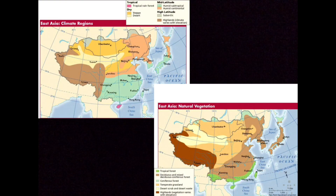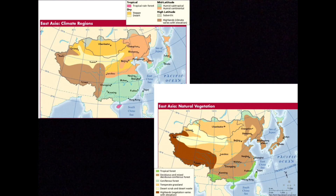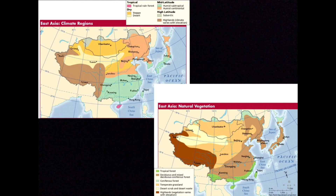Now, the climates and vegetation of East Asia. The first thing to look at is the climates. Latitude and physical features dominate the climate — that's what creates and changes the climates more than anything.